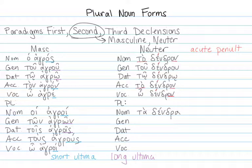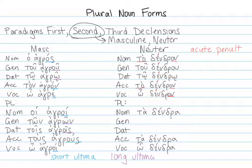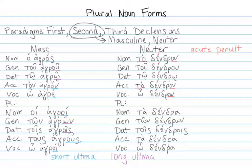In the plural, our nominative plural form is ta-dendra, and the accusative is identical in form: ta-dendra. The vocative gets its own pretend definite article, but the noun form copies the nominative and accusative: o dendra. After that, the genitive and dative are identical to the masculine: ton dendron and tois dendrois. Again, with this particular noun there's an acute accent on the penult, and no rules change that — it remains an acute accent on the penult the whole time.